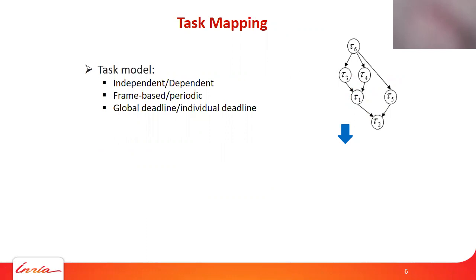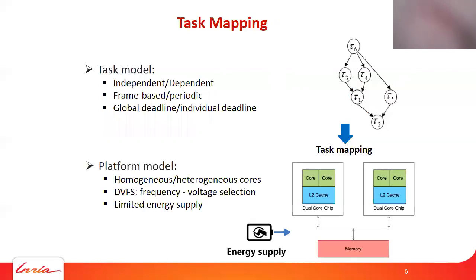This slide presents the system model applied in task mapping. There are two main task models: independent and dependent. In-time execution for time-critical tasks is required; tasks must finish before the given deadline. Mainly two kinds of deadlines are considered: global deadlines and individual deadlines. In the hardware domain, homogeneous and heterogeneous platforms are considered. With the DVFS technique, multiple platforms can scale voltage and frequency during execution to achieve a trade-off between energy saving and application execution quality with limited energy supply.